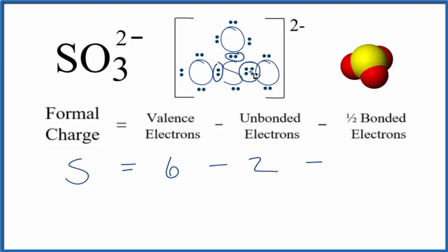And then one half of the bonded electrons. These are bonds, and then we have a double bond, so we have four, six, eight. Eight over two. So six minus two minus four, that gives us a zero.